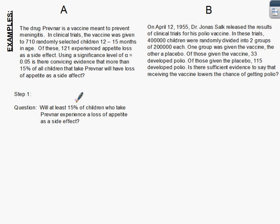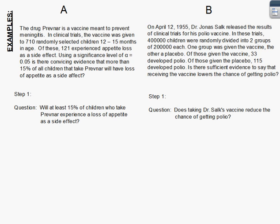So the first thing — Step 1 — when you are given a Z or T test, a test of significance question, you need to write down all four steps. On your paper, I want to see Step 1, and what you're going to do is paraphrase. There's a lot of information given in the full question. Really what it comes down to is: will at least 15% of children who take Prevnar experience a loss of appetite? And for question two: does taking Dr. Salk's vaccine reduce the chance of getting polio?